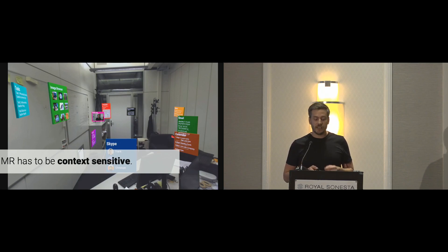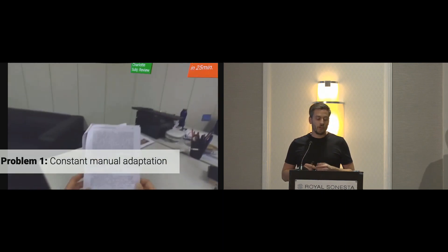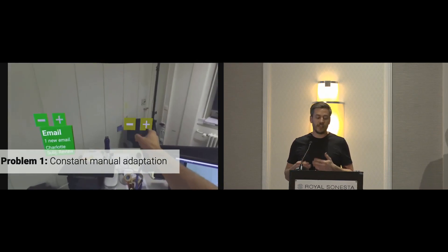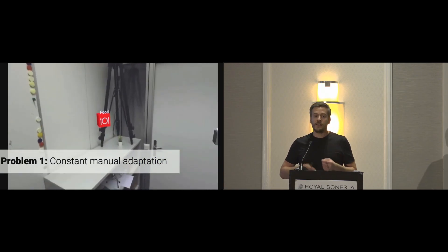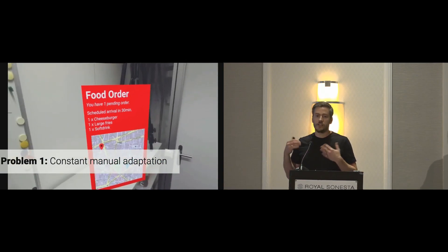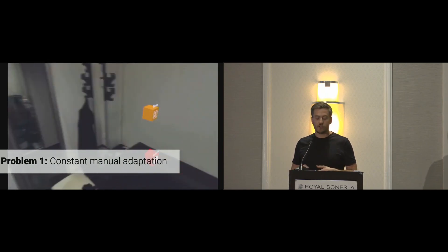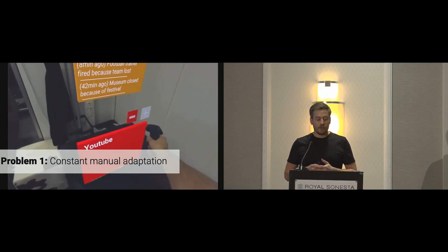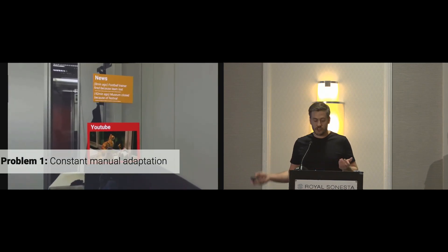Context sensitivity should avoid two main problems. The first is constant manual adaptation. Here the user is switching tasks from reading a paper to taking a break. If the interface is distributed in 3D, they have to adjust all the applications to fit their needs — for example, to see when their next train goes, to watch a YouTube video, when their food comes, or the news. This they have to do every single time they switch tasks, which is tedious and cumbersome.